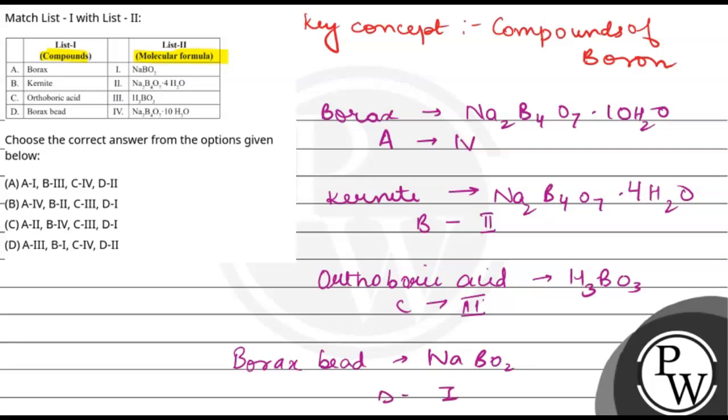So according to our correct option, that is option number B. That is A-4, B-2, C-3, and D-1.